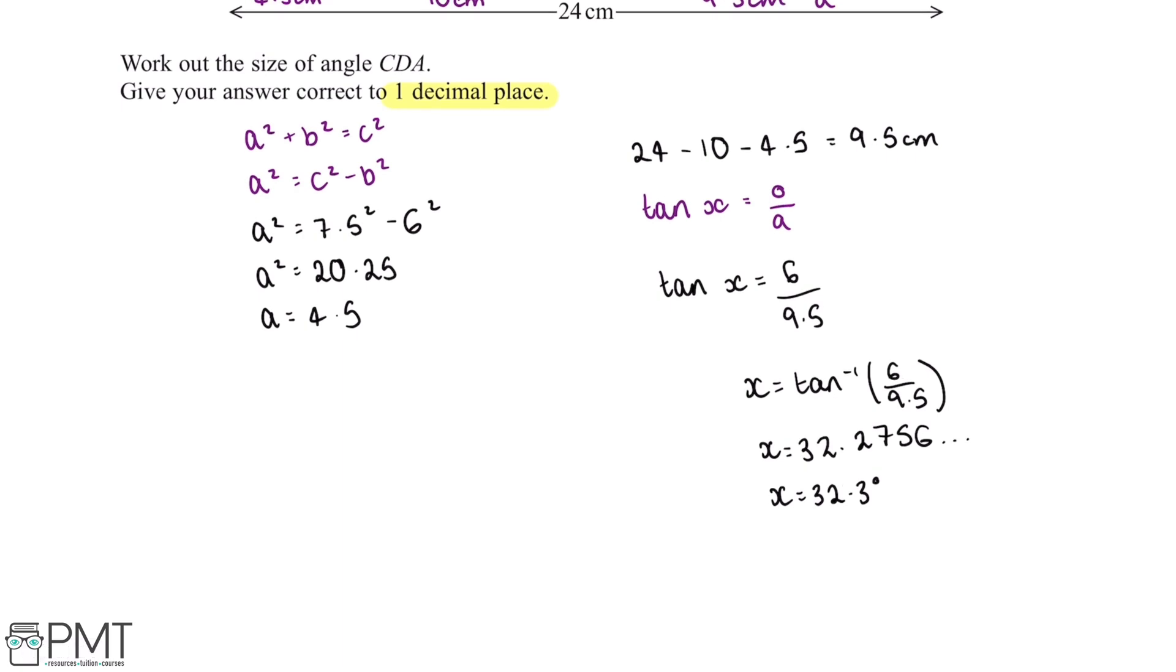Now this question's worth five marks. We'll get our first two marks for correctly using Pythagoras's theorem to work out the length of the triangle on the left. We'll get our third mark for correctly working out the length of the triangle on the right. We'll get our fourth mark for using trigonometry to work out the angle of CDA.